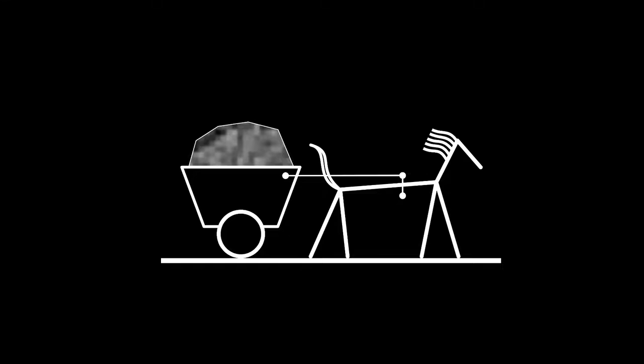That assumption isn't necessarily true — the horse could take off with such vigor that they separate, or the cart could overtake the horse. But neither of those cases will be part of this analysis. I'm going to presume for the purposes of this discussion that the cart and the horse move together as one object.